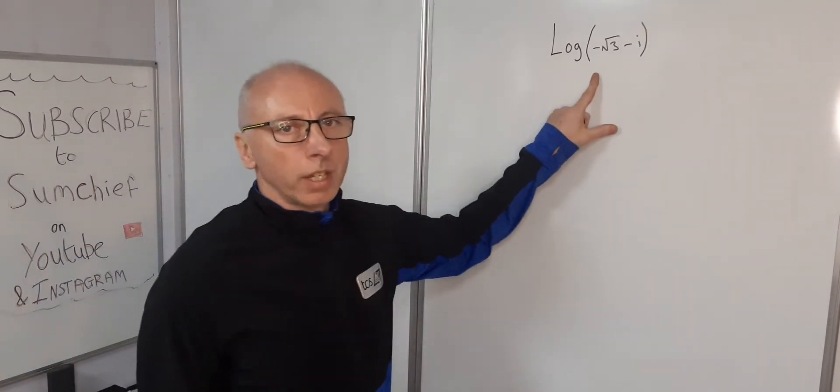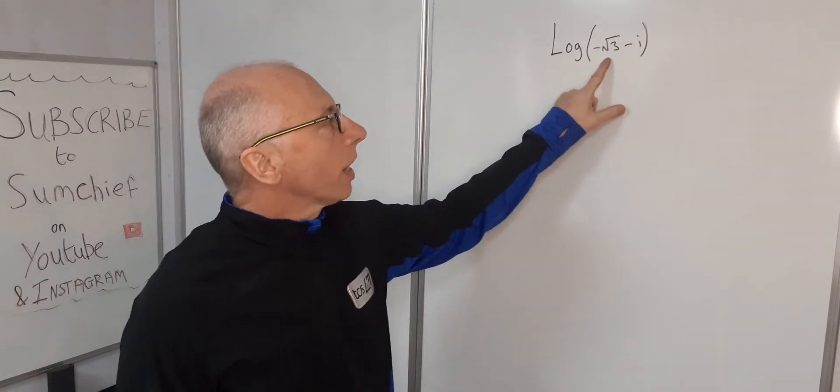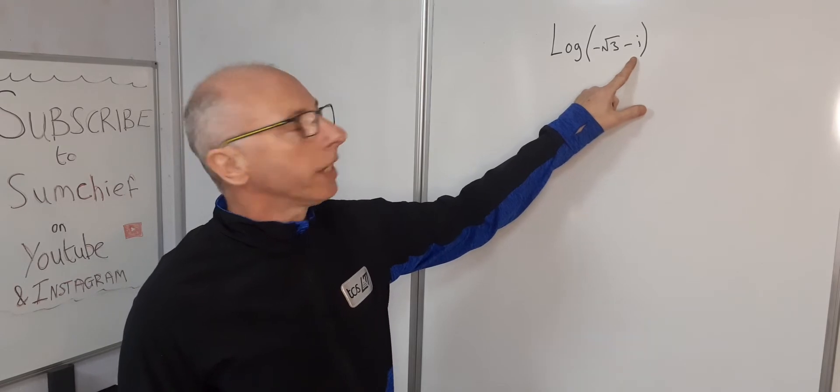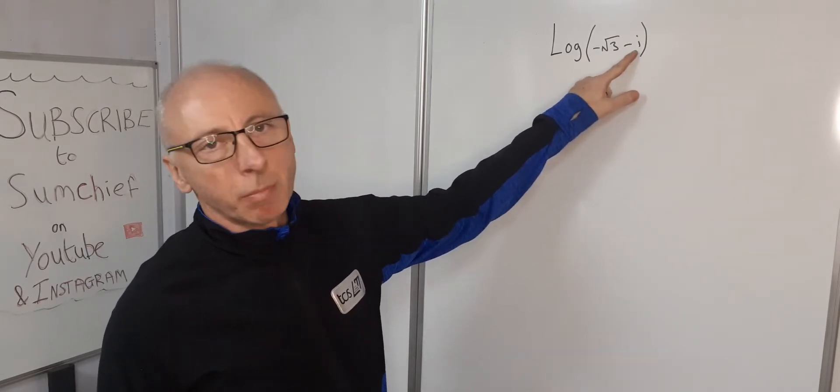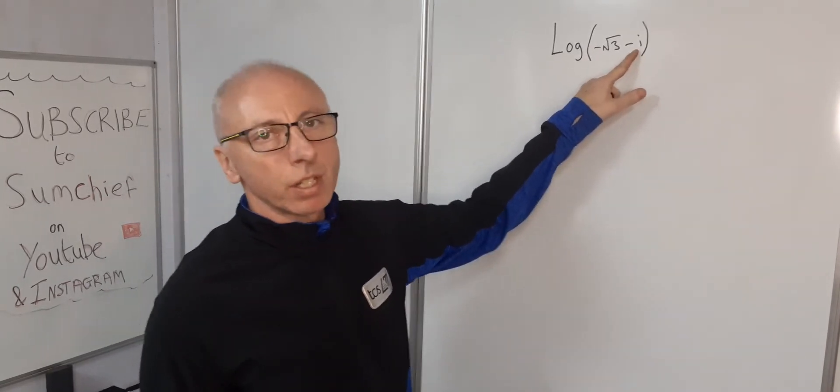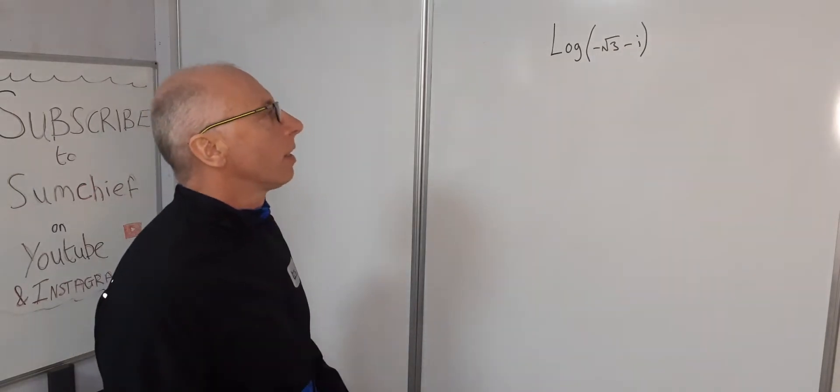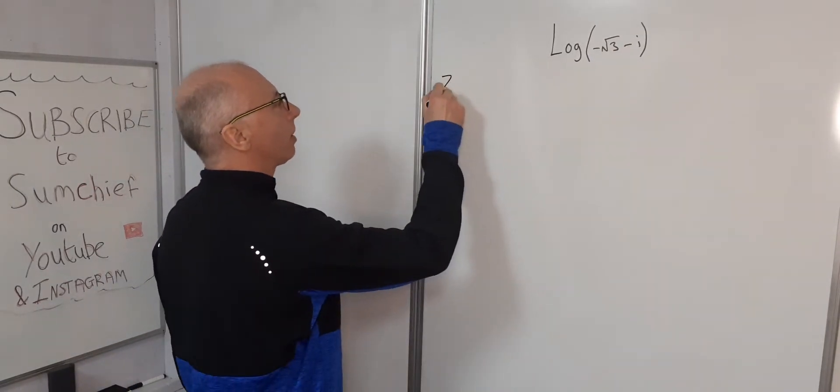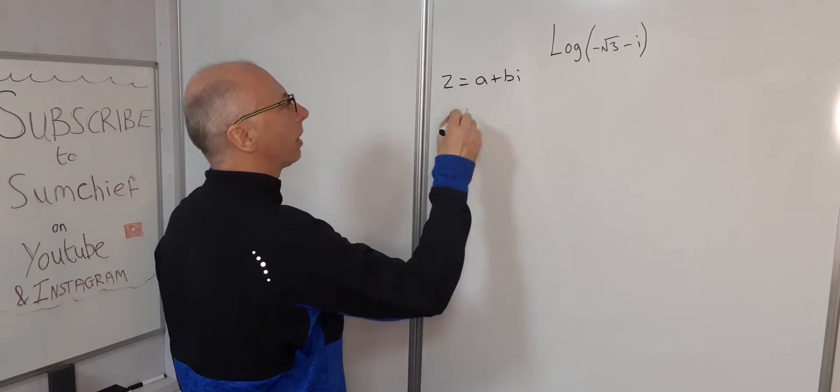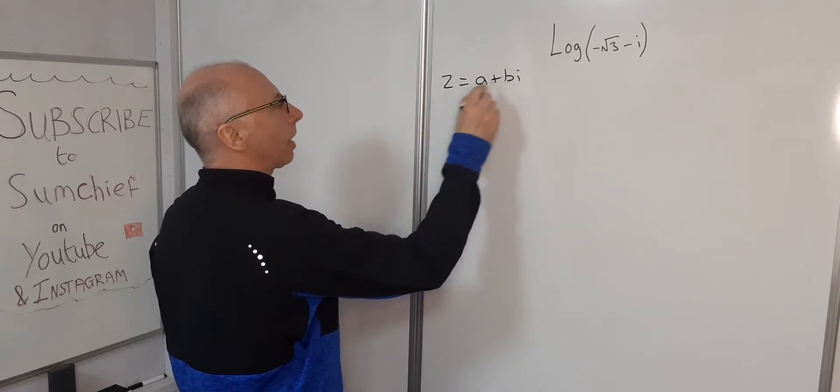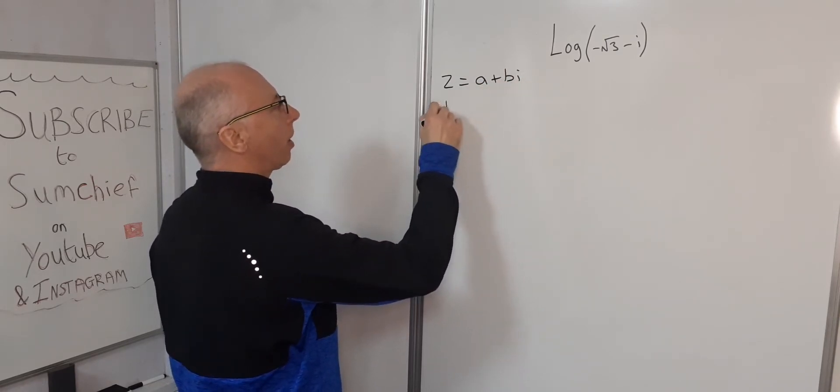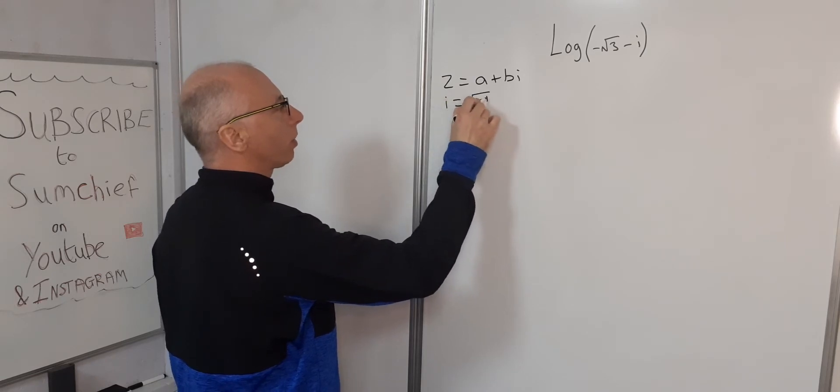Okay, our question here is to find the log of negative root 3 minus i. So the minus i indicates here we're into complex analysis. In complex analysis, z equals a plus bi, where a and b are real numbers and i equals square root minus 1.